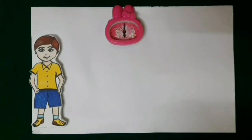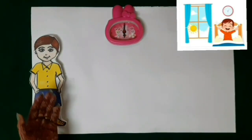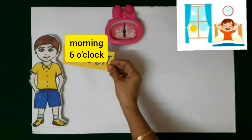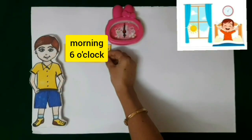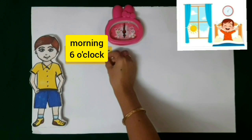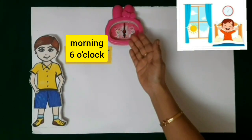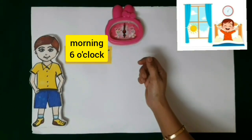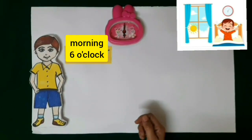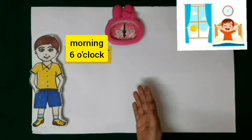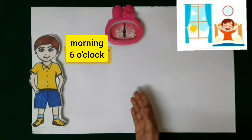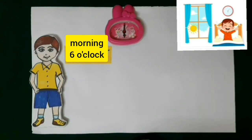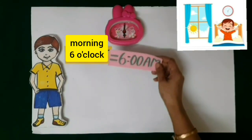Today Anshul woke up at 6 o'clock in the morning and went for a walk. Look at the clock — it is 6 o'clock in the morning. We use a.m. for the morning time, so Anshul woke up at 6 a.m.